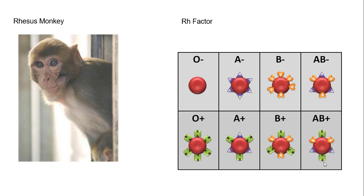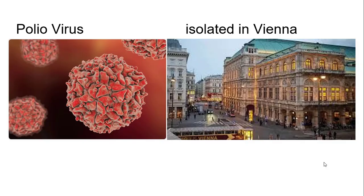Not only did he do this, he also studied and isolated the polio virus. He did it in Vienna, and this later led to a vaccine by Jonas Salk for polio, which really helped millions of people.